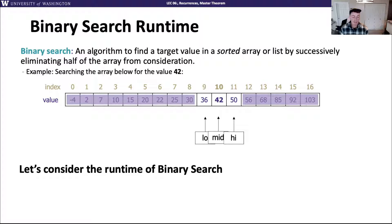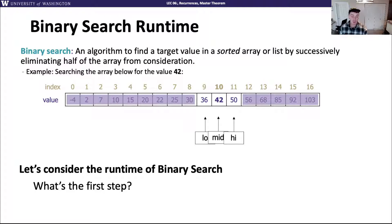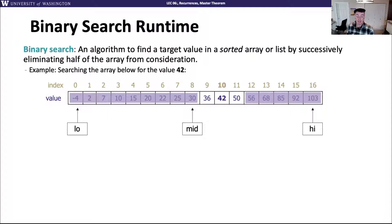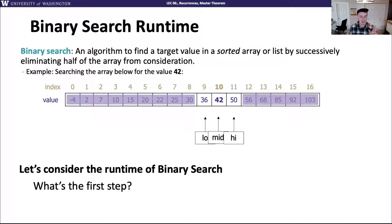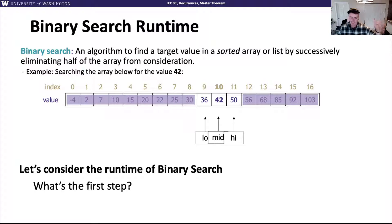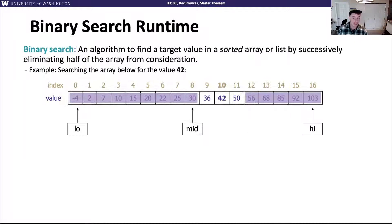The first step in trying to answer these questions is to come up with a code model, and then once we have that code model we can do asymptotic analysis on it. This code model is a little complex because it really depends not just on the input size, but on what values are in the array and what we're looking for. Which means we know we're going to need to do case analysis.